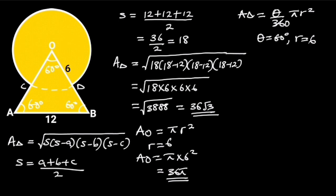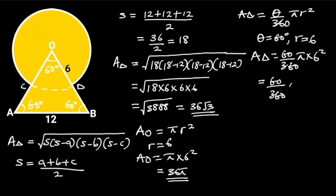If we plug in these values in the formula, the area of the sector will be equal to 60 degrees over 360 degrees, times pi times 6 squared. This can be written as 60 over 360 times pi times 6 times 6. 360 divided by 60 is 6, and 6 divided by 6 is 1, leaving us with 1 times pi times 6, which equals 6π. So the area of the sector is equal to 6π square units.